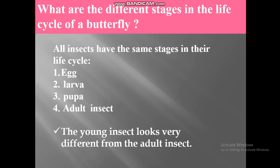All insects have the same stages in their life cycle: number 1, egg; number 2, larva; number 3, pupa; number 4, adult insect. The young insect looks very different from the adult insect.